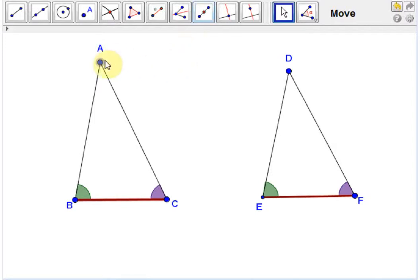We're given two triangles ABC and DEF. Angle B is congruent to angle E, side BC is congruent to side EF, and angle C is congruent to angle F.